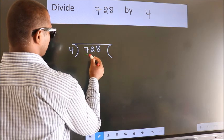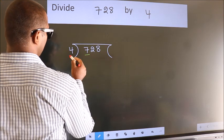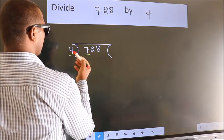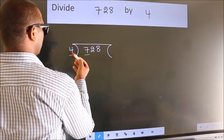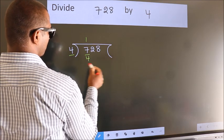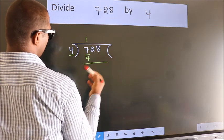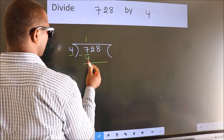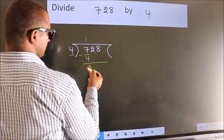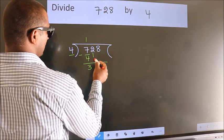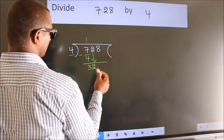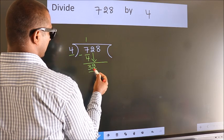Here we have 7, here 4. A number close to 7 in the 4 table is 4 ones, 4. Now we should subtract — we get 3. After this, bring down the beside number. So, 2 down. So, 32.